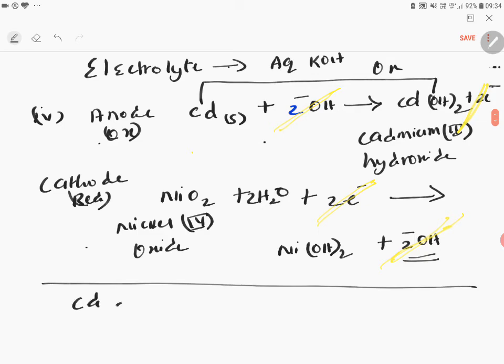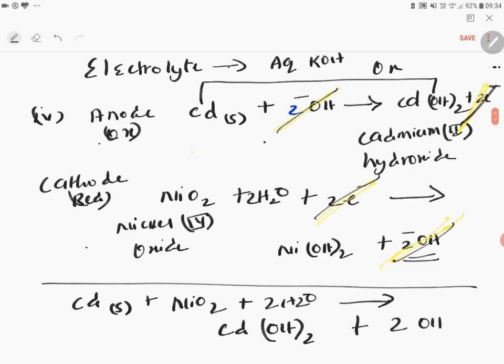Therefore, Cd(s) + NiO₂ + 2H₂O giving you Cd(OH)₂ + 2OH⁻. You see children, this is called a systematic way of learning without memorizing the equations. You should know what is anode, what is cathode, and that it is in the basic medium. You should try to write using the ion-electron method. If you write and cancel the common terms, you are getting the final equation.